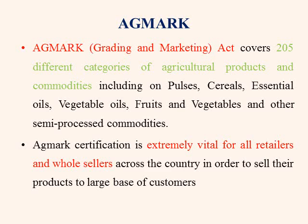AGMARK Act covers 205 different categories of agriculture products and commodities. It also includes pulses, cereals, essential oils, vegetable oils, fruits and vegetables, and also certain special commodities or semi-processed commodities. AGMARK certification is extremely important for all retailers and wholesalers across the country in order to sell their products to a large base of customers.